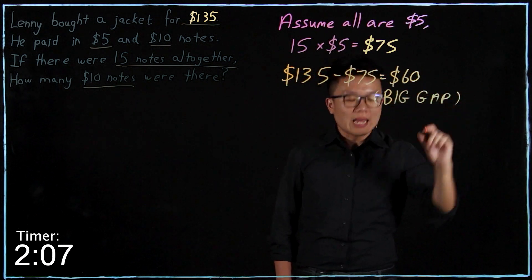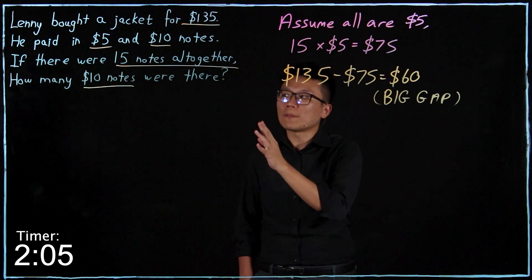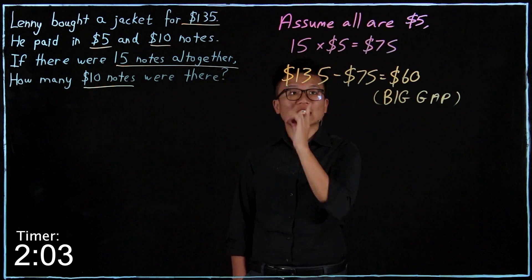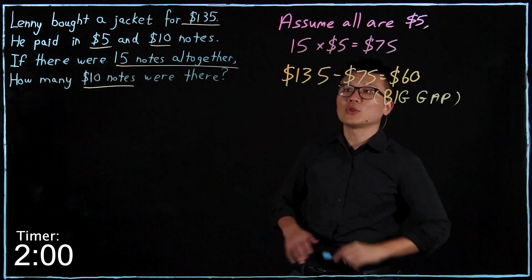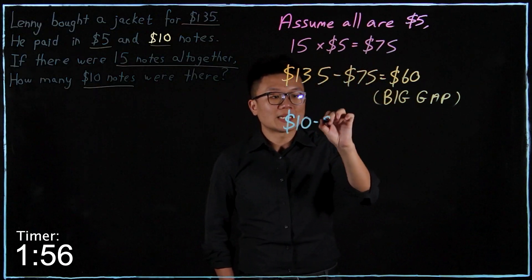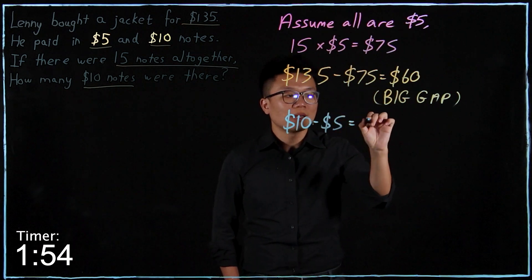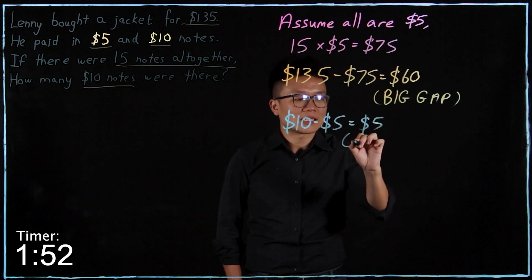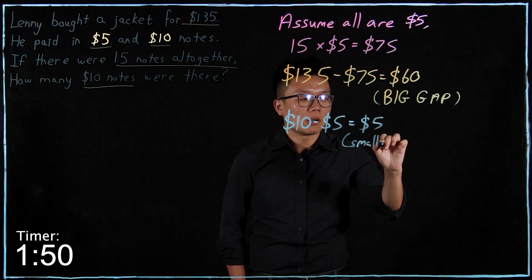And then the next portion would be, I have to find a small gap because the difference between one $10 note and one $5 note. So $10 minus $5 would be $5. So this is known as the small gap.